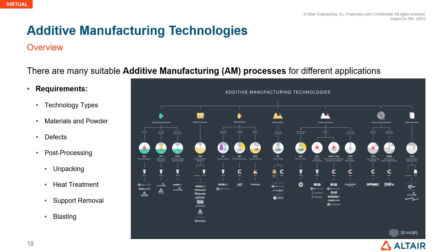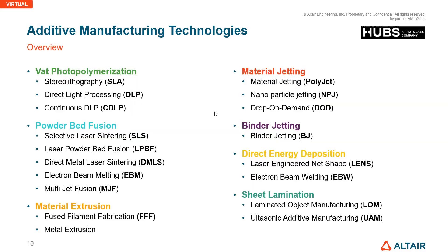There are various types of additive manufacturing technologies available in industry. Based on requirements, we have different technology types, materials, and powder defects. The main process types include: vat photopolymerization (stereolithography, DLP, continuous TLP), powder bed fusion (SLS/SLM selective laser sintering/melting, laser powder bed fusion, electron beam melting, multi jet fusion), material extrusion, material jetting, binder jetting, directed energy deposition, and sheet lamination.